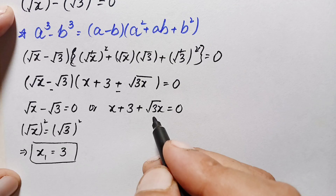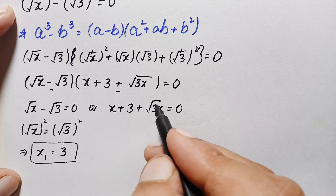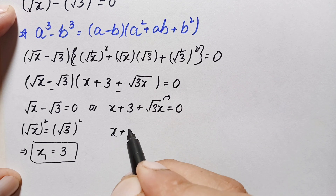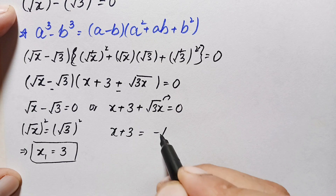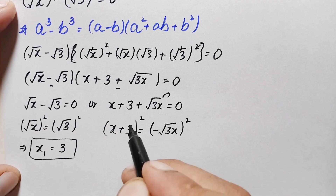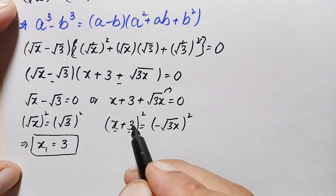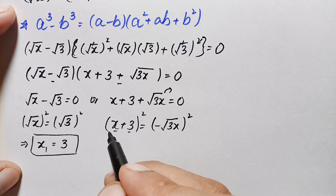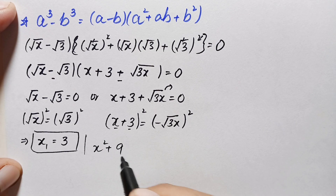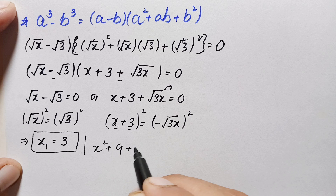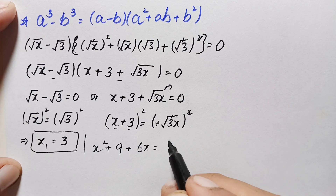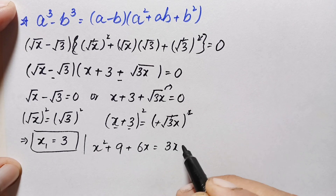Now we solve the second equation: x + 3 + √(3x) = 0. We need to eliminate the square root, so we move the √(3x) term to the right-hand side: x + 3 = −√(3x). Taking the square on both sides and expanding using (a + b)² = a² + 2ab + b², the left side becomes x² + 9 + 6x, and the right side becomes 3x.